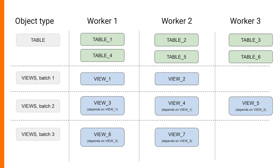That was the simple case, but some objects can depend on each other within the same object type. A good example is views — views can depend on each other. In this case, you need to specify dependencies manually, but Snow DDL will organize such objects into batches and resolve them for you in the correct order.